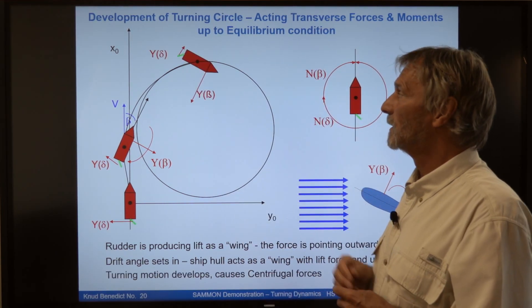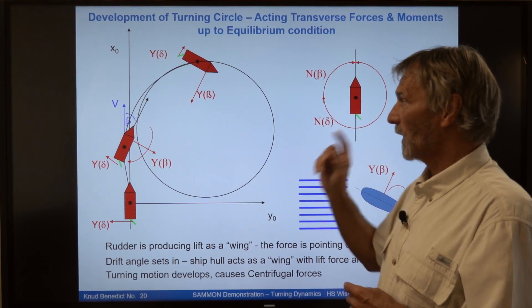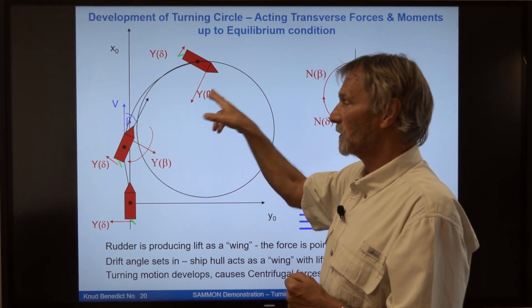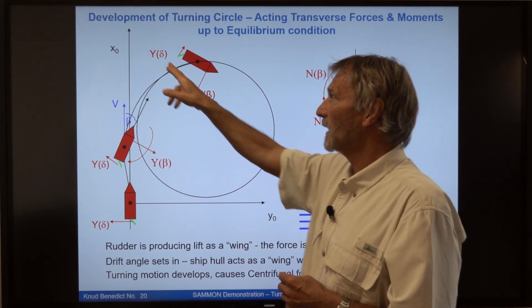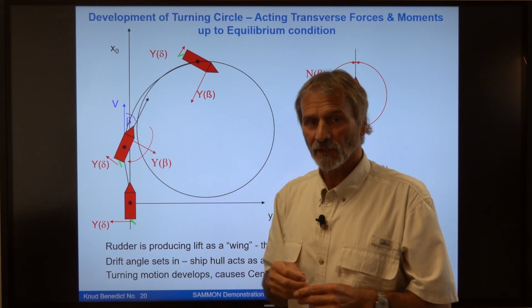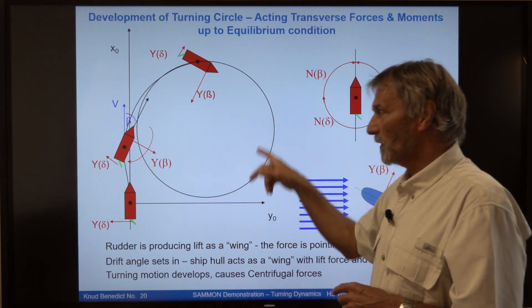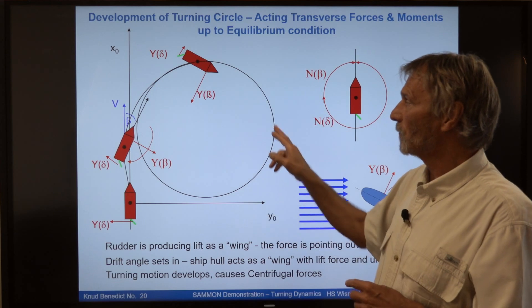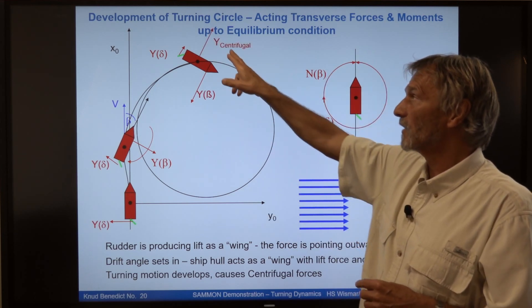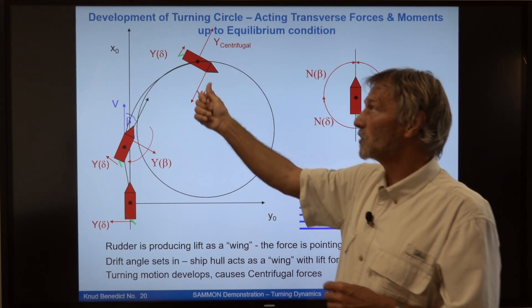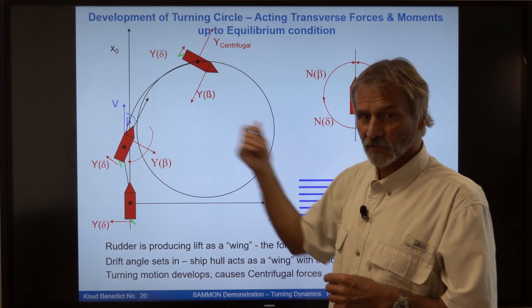So the next state is here. So we have still the forces due to the drift angle beta and due to the rudder angle delta. But now the ship is already on a circular motion. So when we know from circular motion that there's a centrifugal force, which is pointing outward of the circle.